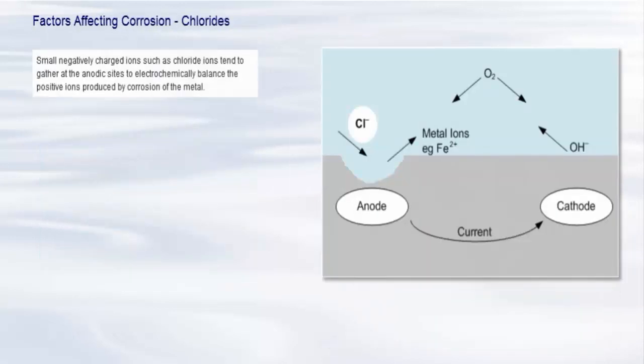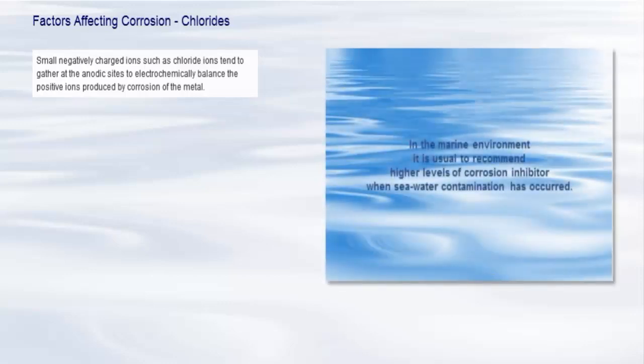Small, negatively charged ions, such as chloride ions, tend to gather at the anodic sites to electrochemically balance the positive ions, Fe2+, etc., produced by corrosion of the metal. Chlorides increase the localized conductivity, which creates an accelerated environment for corrosion to progress. In the marine environment, it is usual to recommend higher levels of corrosion inhibitor when seawater contamination has occurred.